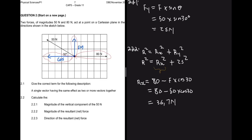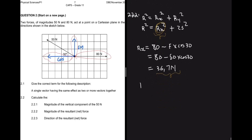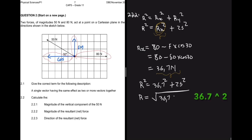R_x equals 80 minus the x-component of the 50-newton force, which is 50 × cos(30°), giving R_x = 80 − 43.3 = 36.7 newtons. So R² = 36.7² + 25², and R = √(36.7² + 25²) = 44.44 newtons.